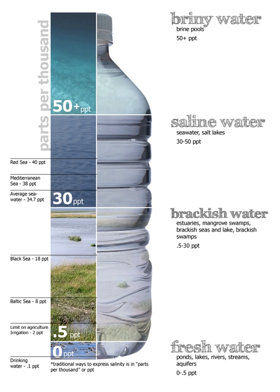Salinity is an ecological factor of considerable importance, influencing the types of organisms that live in a body of water. Salinity also influences the kinds of plants that will grow either in a water body or on land fed by that water. A plant adapted to saline conditions is called a halophyte.